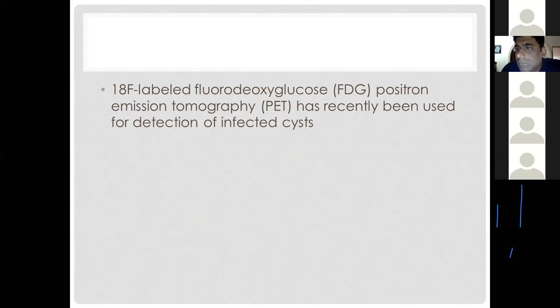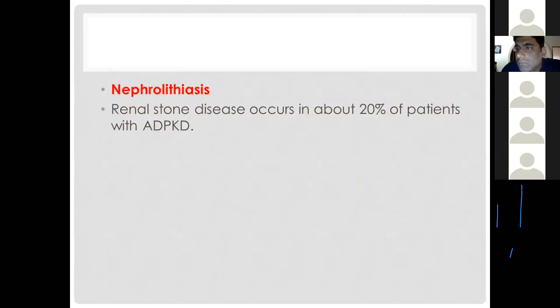If the renal parenchyma is infected, IV antibiotics are used; however, if the inner lining of the cyst itself is infected, these infections are usually very resistant to antibiotics. FDG-labeled positron emission tomography (PET) scan is used to confirm whether a cyst is infected, though this is not available in Pakistan. Stone disease occurs in about 20 percent of ADPKD patients, with probable causes including hypocitraturia, hyperoxaluria, and hypercalciuria.